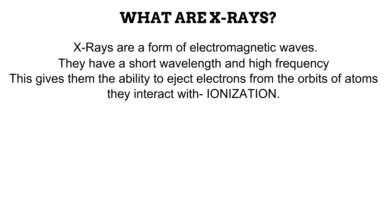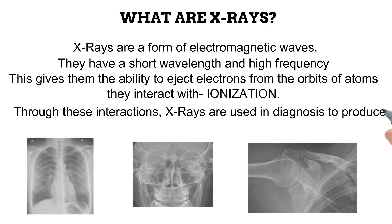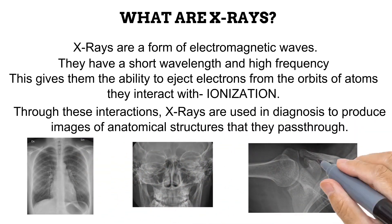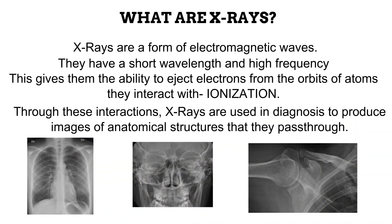These two properties give X-rays the ability to ionize matter. This means that they can eject electrons from atoms that they interact with, a process known as ionization. This is why you've most likely heard of X-rays being called ionizing radiation. It is through these ionization interactions that X-rays are used in diagnostic radiography to produce images of the anatomy that they pass through.